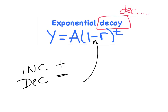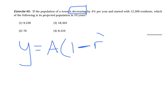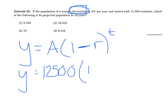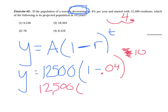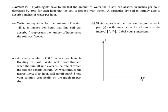Exercise 2: If the population of a town is decreasing by 4% per year and started with 12,500 residents, what is the projected population in ten years? Using y equals a times one minus r to the t: y equals 12,500 times one minus 0.04 to the t. With t equals 10, that becomes 12,500 times 0.96 to the tenth, which gives approximately 8,310.